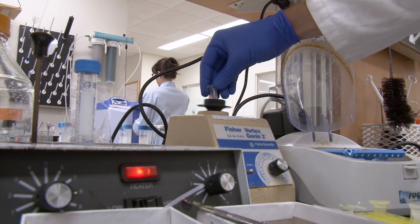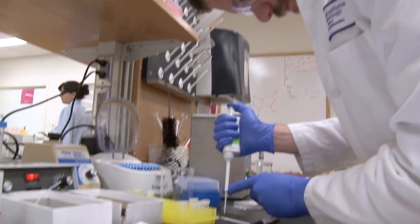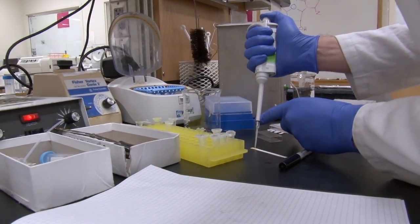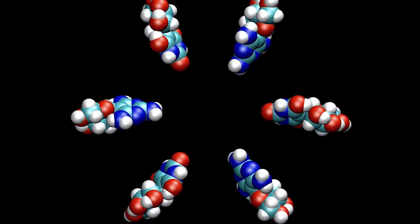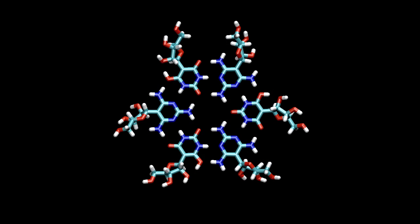So far, none of the labs working on chemical evolution has been able to coax actual RNA to self-assemble in the lab. But Hud and his team have identified a couple of molecules that make a structure that almost looks like RNA.